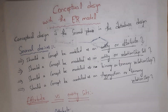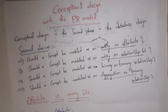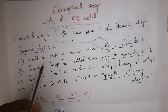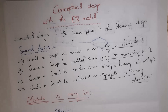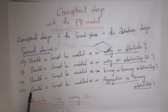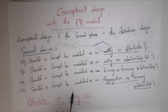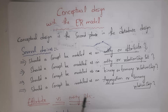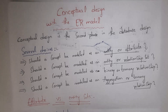While creating ER diagrams in the conceptual design phase, the database designer has several choices. Like, should a concept be modeled as an entity or attribute? Should a concept be modeled as an entity or relationship set? Should a concept be modeled as a binary or ternary relationship? Or should a concept be modeled as an aggregation or ternary relationship? This is entirely the designer's choice. I will explain each of them.